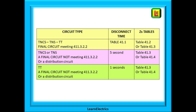We can summarize this in a little table. For any final circuit that meets regulation 411.3.2.2 on page 58, use table 41.1 to find the disconnection time and the two ZS tables shown. For any TN circuit that does not meet regulation 411.3.2.2 — say it's an 80 amp circuit — we apply five seconds as a disconnection time and use the ZS tables shown in the middle row. For a TT circuit not meeting regulation 411.3.2.2, we apply a one second disconnection time and use the ZS tables indicated in the bottom row.